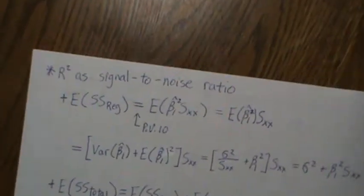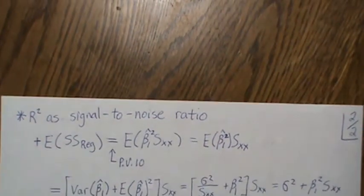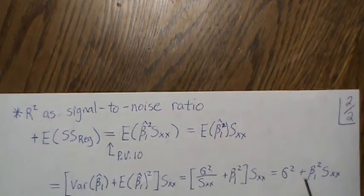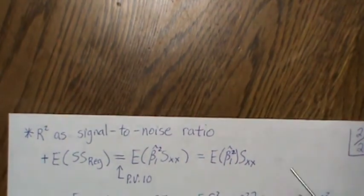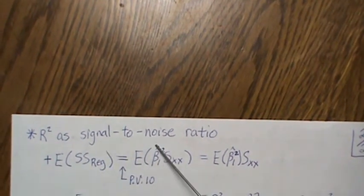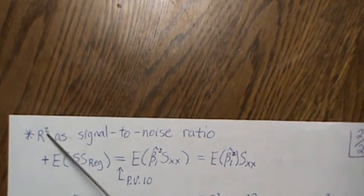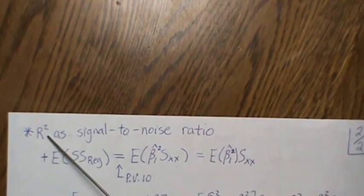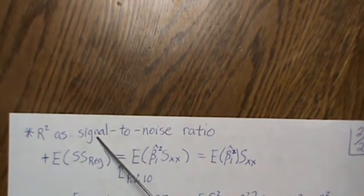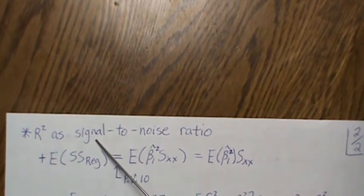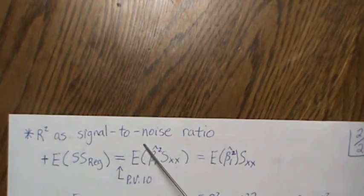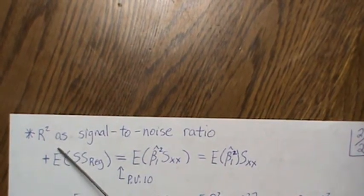Some like to think of R² as a signal-to-noise ratio. When the signal is high and the noise is low, R² tends to be close to one. Conversely, when the signal is low and the noise is high, R² tends to be close to zero.